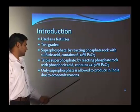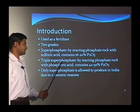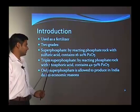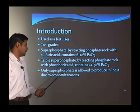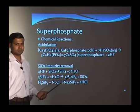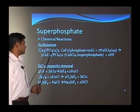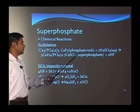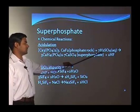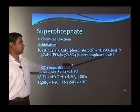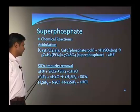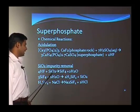Only superphosphate is permitted to be produced in India due to economic reasons, as triple superphosphate is not economically desirable. For superphosphate manufacturing, the acidulation means the water of the phosphate rock — Ca3(PO4)2 — reacts with sulfuric acid. The silicon impurity is removed using sand, and the hydrofluoric acid is removed by use of NaCl.